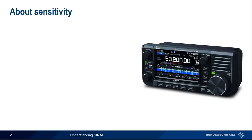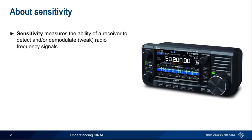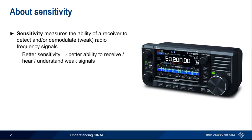We'll start by defining what we mean by sensitivity. Sensitivity describes the ability of a receiver to detect and or demodulate a received radio frequency signal. More specifically, sensitivity is a way of quantifying the weakest signal that can be reliably received. Better sensitivity means a greater ability to receive and extract information from weak signals.